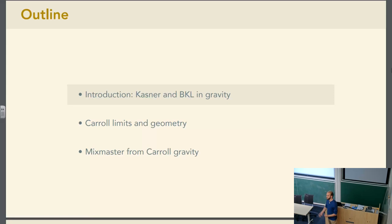So the plan is as follows. I'll first introduce this idea of BKL limits and the Kastner geometries that are closely related to it in the familiar context of Einstein gravity. Then I'll talk a bit about Carroll limits and the effect it has on the Lorentzian geometry. This is a bulk Carroll limit. And in the models that we obtain, we'll be able to reproduce a particular kind of BKL dynamics known as a mix master model.